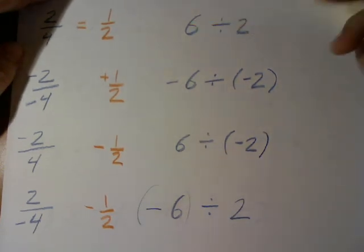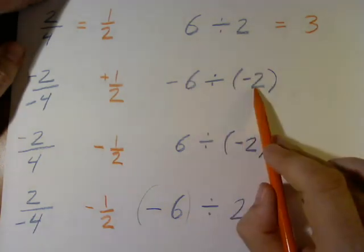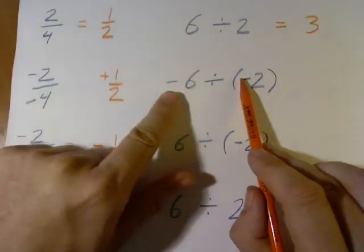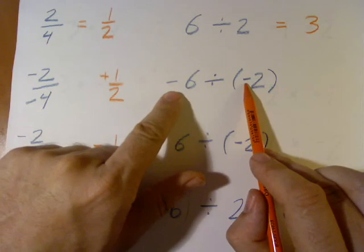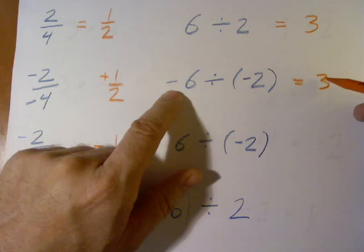6 divided by 2. That's 3. Negative 6 divided by negative 2. Notice we have 2 negatives in there. That means we get 3. And it's a positive number.